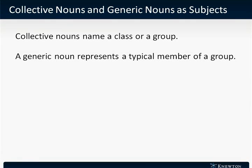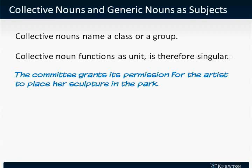Let's look at some examples of how collective nouns usually function in sentences. Usually, the things described by a collective noun function as a unit and therefore are treated as a singular noun. For instance, take this sentence: "The committee grants its permission for the artist to place her sculpture in the park." The collective noun committee is talking about a number of people, but they're acting as one unit to give permission. Therefore, the noun committee takes the singular verb grants and the singular pronoun its.